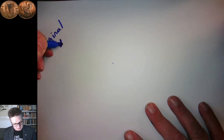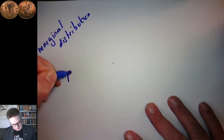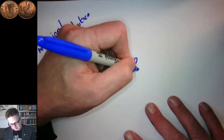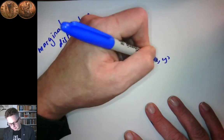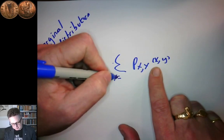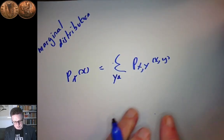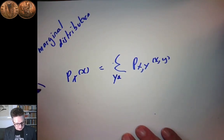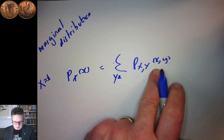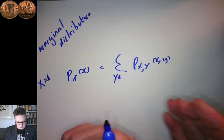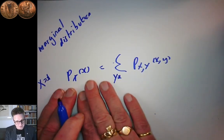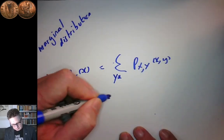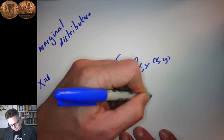One thing we can do with the joint distribution is marginalize it. Marginalization means taking the joint distribution and working out the probability distribution for just one of the two variables — this gives the marginal distribution. The probability of X equals x is found by summing out over all possible values of Y. It doesn't matter what Y is; we're just asking for the probability of getting X equals x, so we sum over Y.